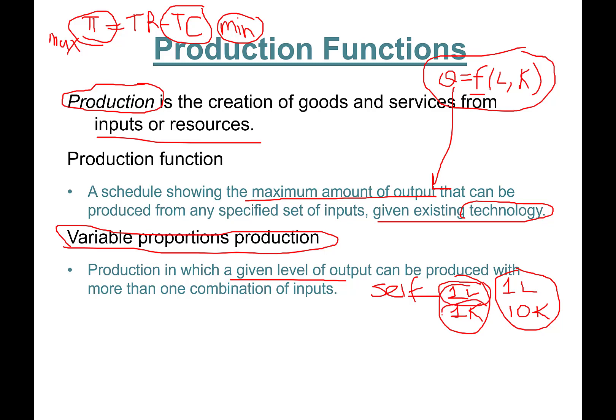Variable proportions of production means you can combine different quantities of labor and capital to produce the same amount. One example is mowing your lawn. You can use two workers and two 24-inch lawnmowers, or you can use one worker and one much more expensive ride-on lawnmower which is 48 inches.